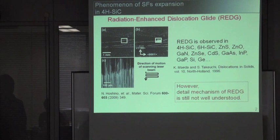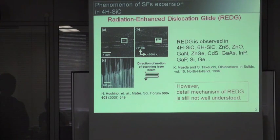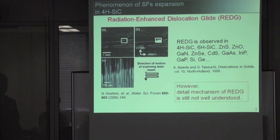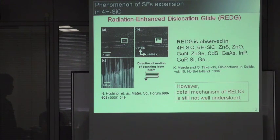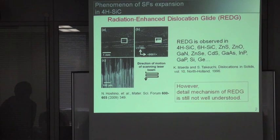However, the detailed mechanisms of RADG are still not well understood. But since the partial dislocations that exhibit RADG in 4H silicon carbide have been well identified as 30-degree silicon carbide partial dislocations, the study of RADG in 4H silicon carbide may make it possible to elucidate the fundamental mechanisms of RADG.